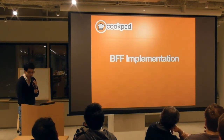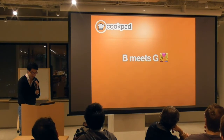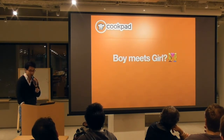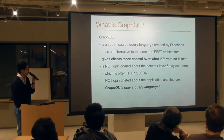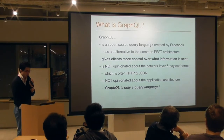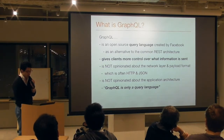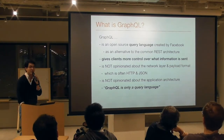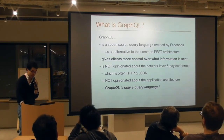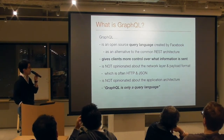How can we implement BFF? The answer is BFF meets GraphQL. What is GraphQL? GraphQL is an open-source query language created by Facebook. It gives clients more control over what information is required. The key feature is that GraphQL is not opinionated about the network layer, payload formats, nor the application architecture — which means GraphQL is typically used with HTTP and JSON response formats, but you can also use another network layer and payload format. GraphQL is only a query language.